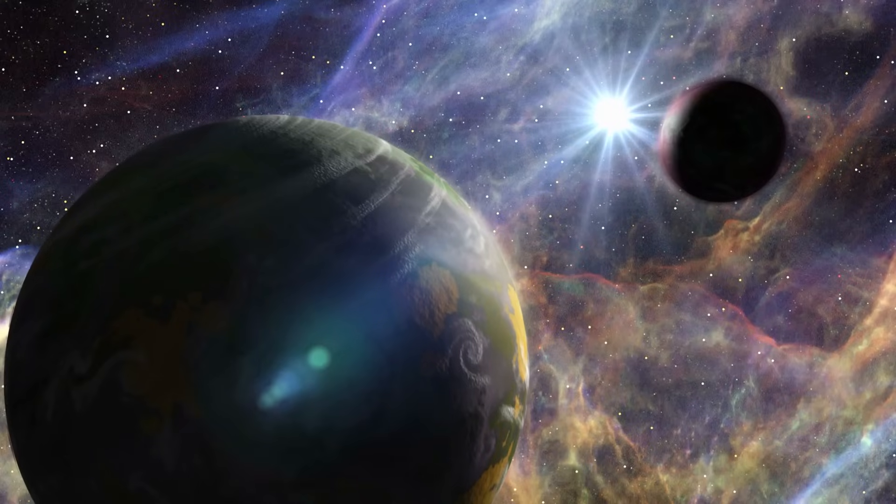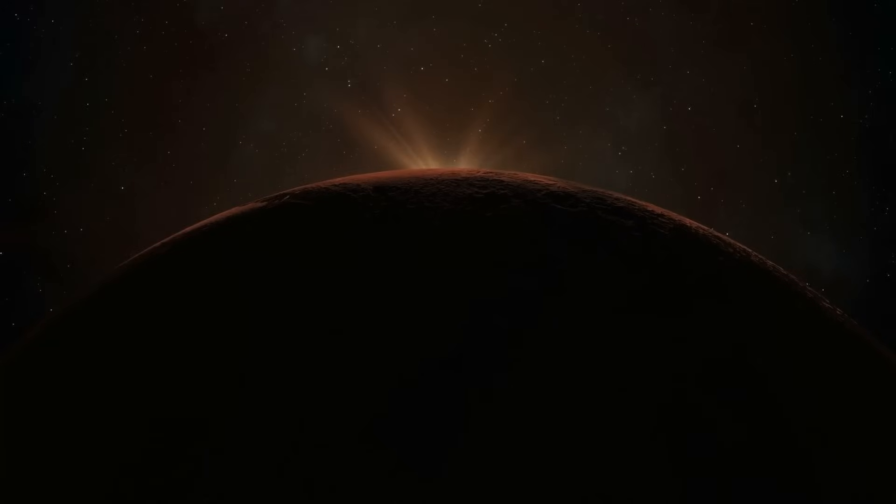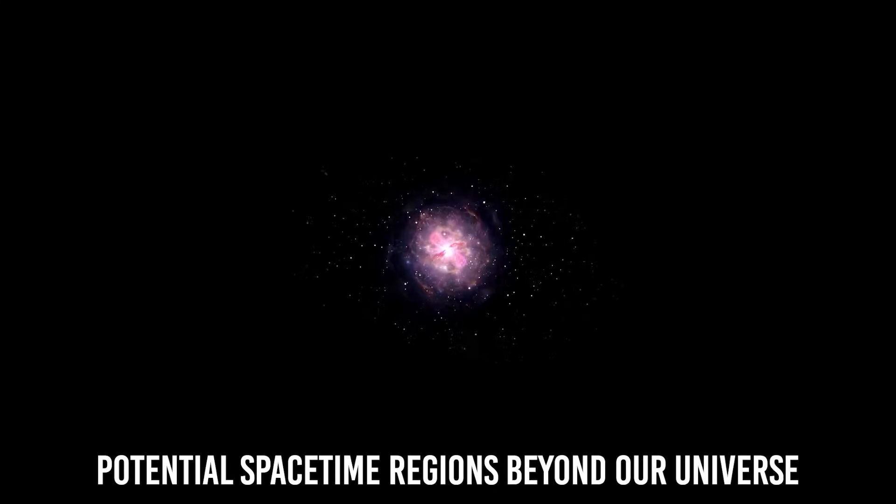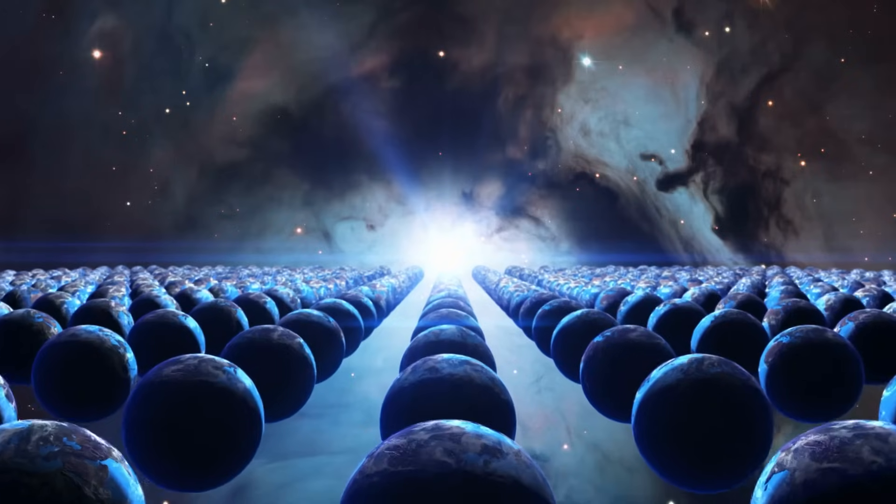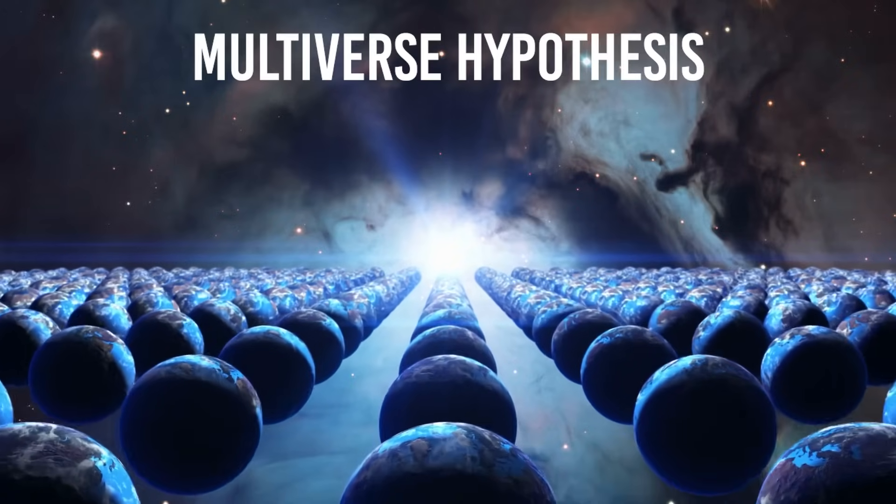If that's the case, then just like here, there could be galaxies, stars, and even life-supporting planets in regions we can't see. Their light simply hasn't reached us yet, or maybe it never will. Cosmologists don't refer to this unseen portion as 'the rest of the universe,' but rather as potential space-time regions beyond our universe. And this definition leads us to a far more radical idea: the multiverse hypothesis.